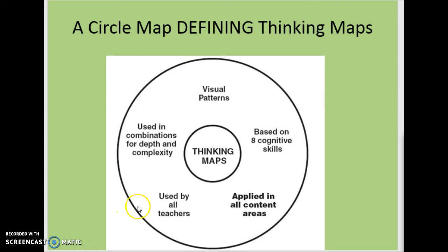What we have here is a thinking map about thinking maps, which tell us why we should use thinking maps in a circle map — it defines thinking maps for us. Thinking maps are visual patterns. Kids learn better with visuals. It can go across content areas; we want all teachers to use it. It's based on eight cognitive skills that we're going to go over today, and you can have different DOKs. Here are some examples of circle maps.